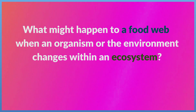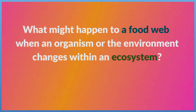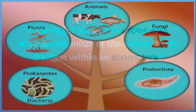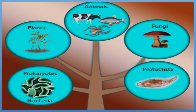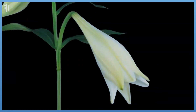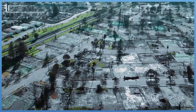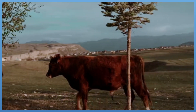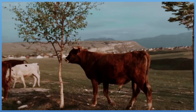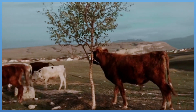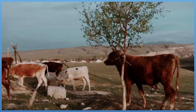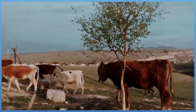What might happen to a foodweb when an organism or the environment changes within an ecosystem? All organisms may be affected. If plants, the producers, were to disappear from an ecosystem, the consumers will need to move to other places to search for food, or they will die. If the number of one species of consumers increases, the resources of food and shelter may disappear, so they will die.